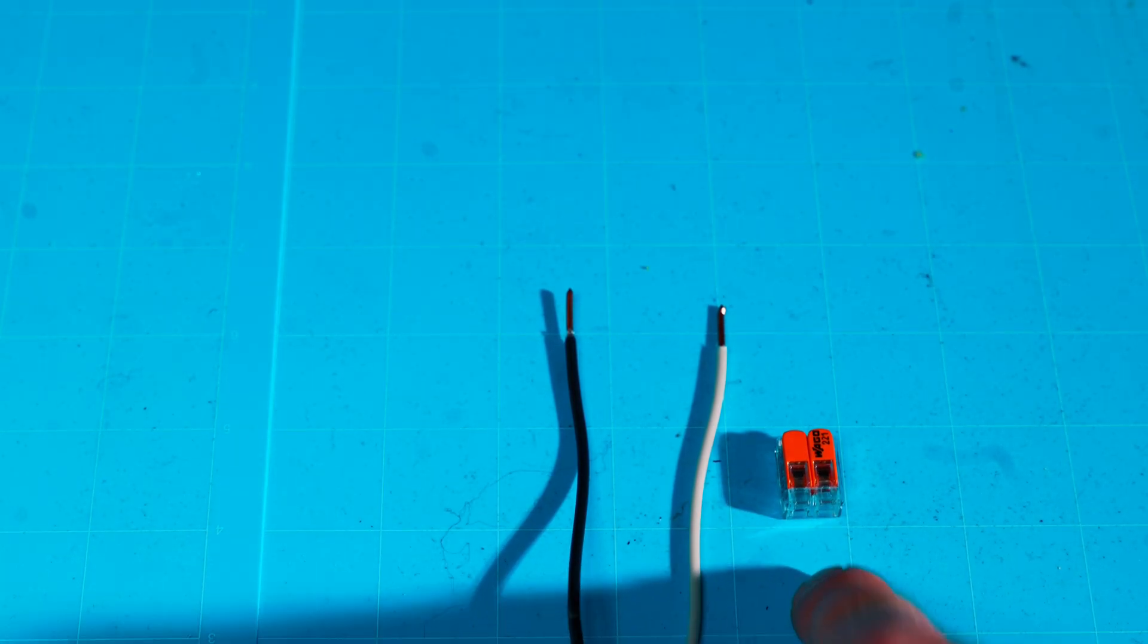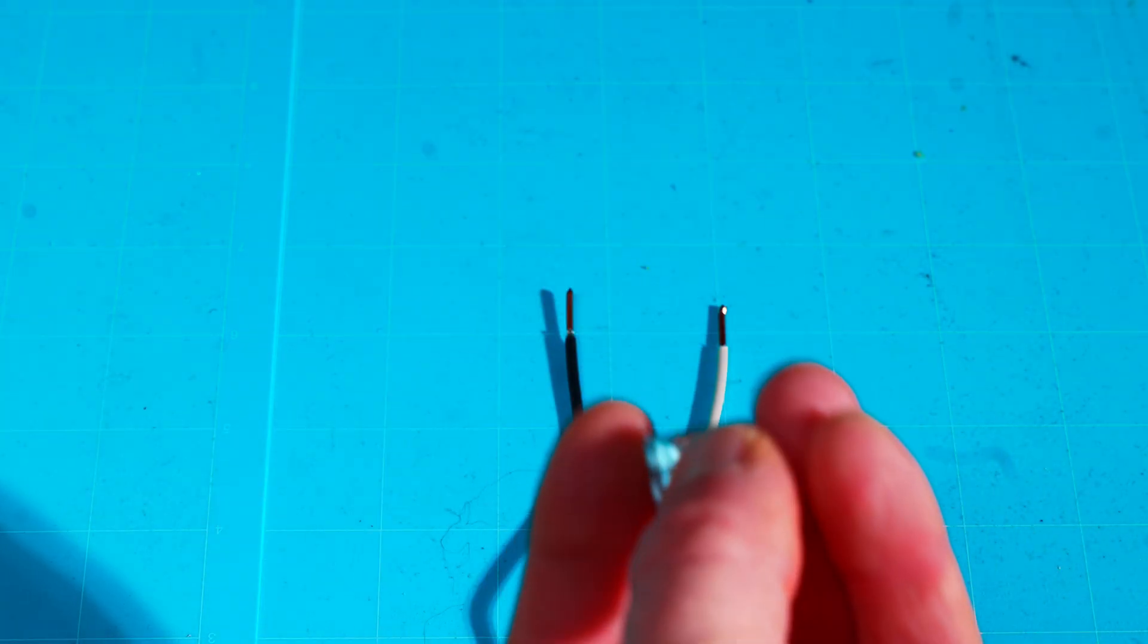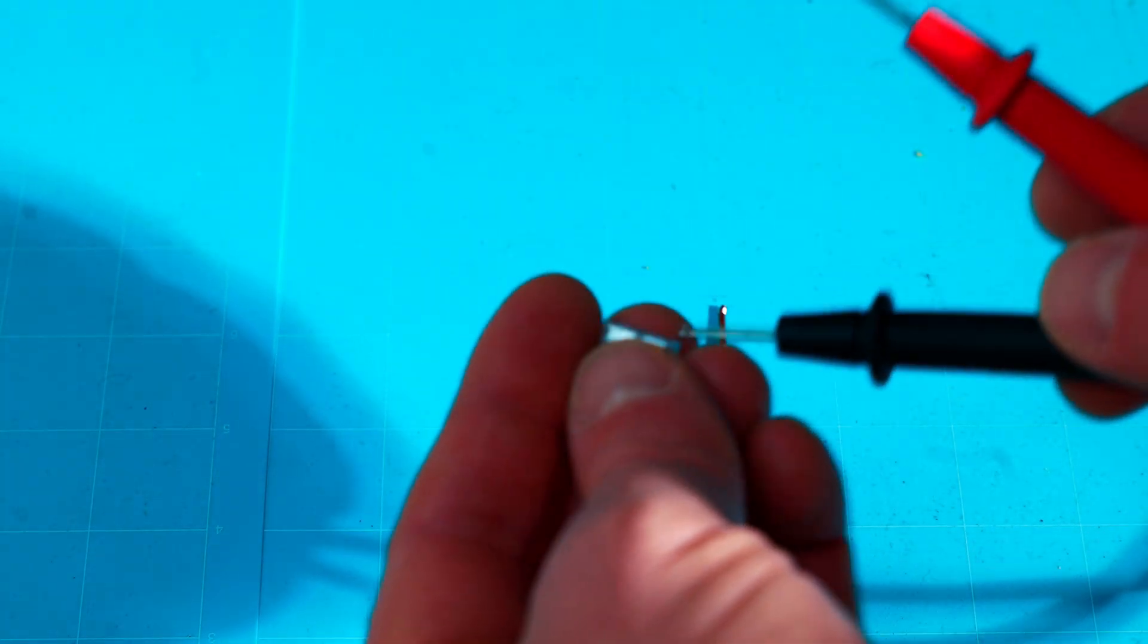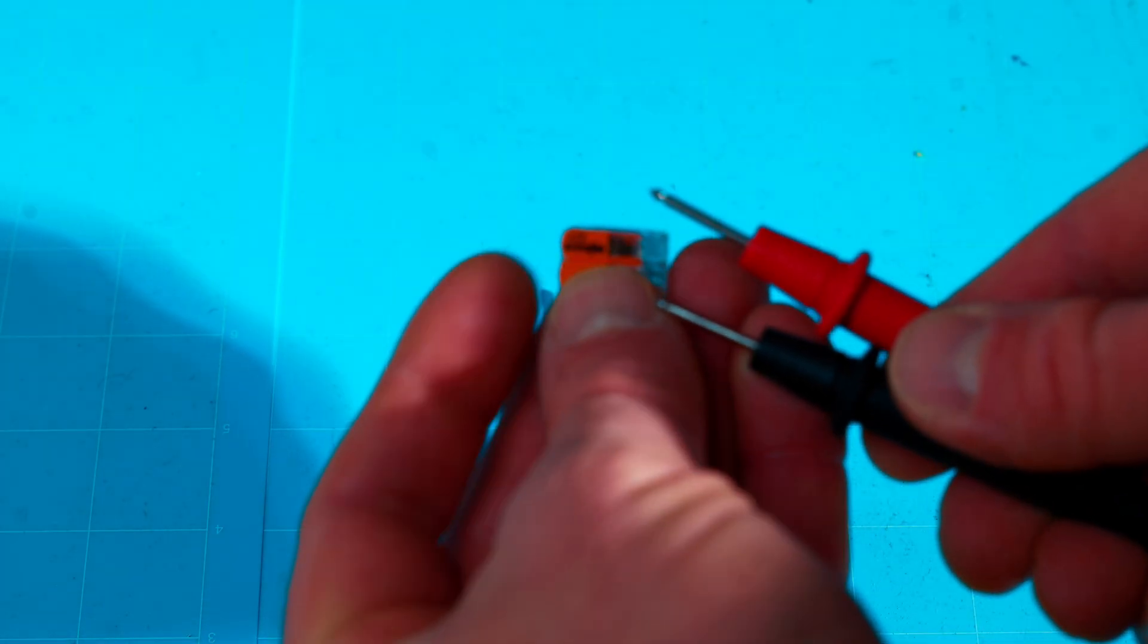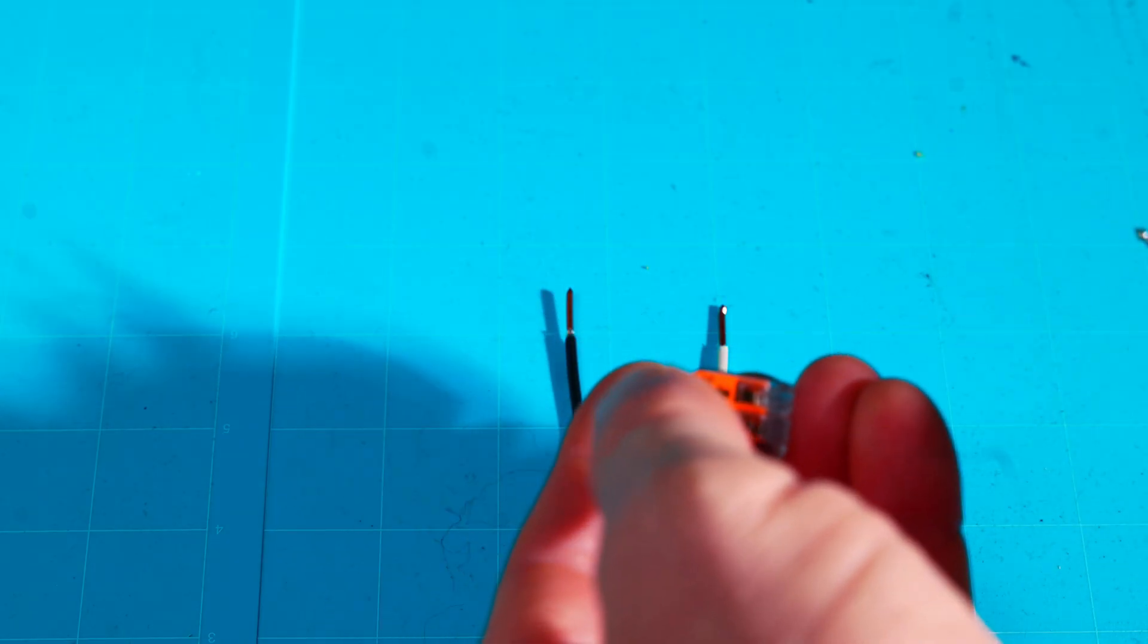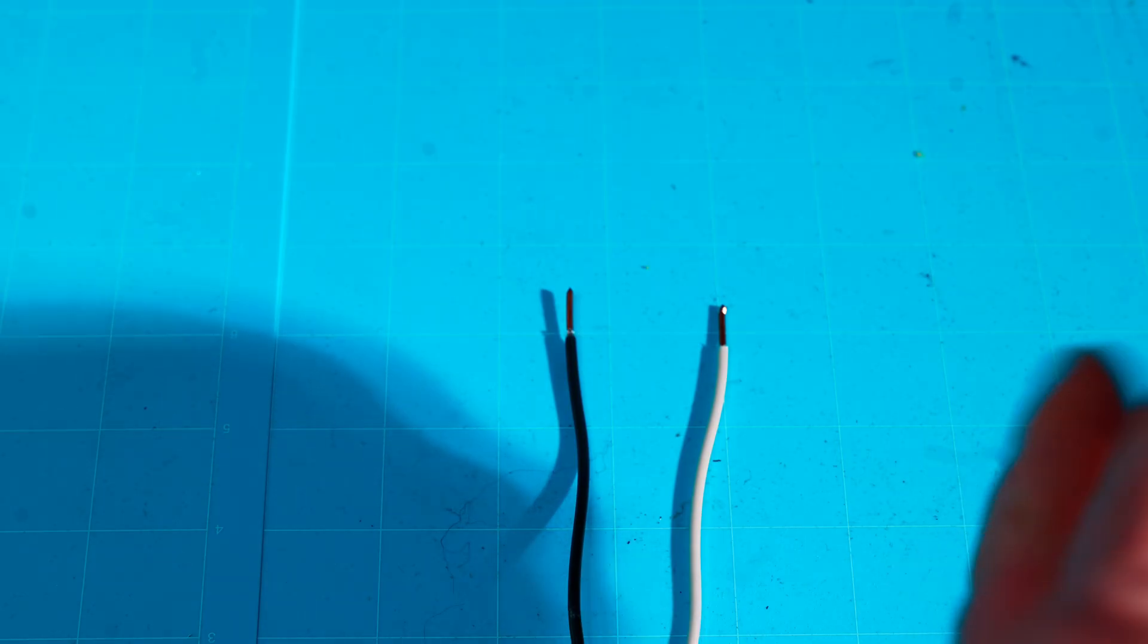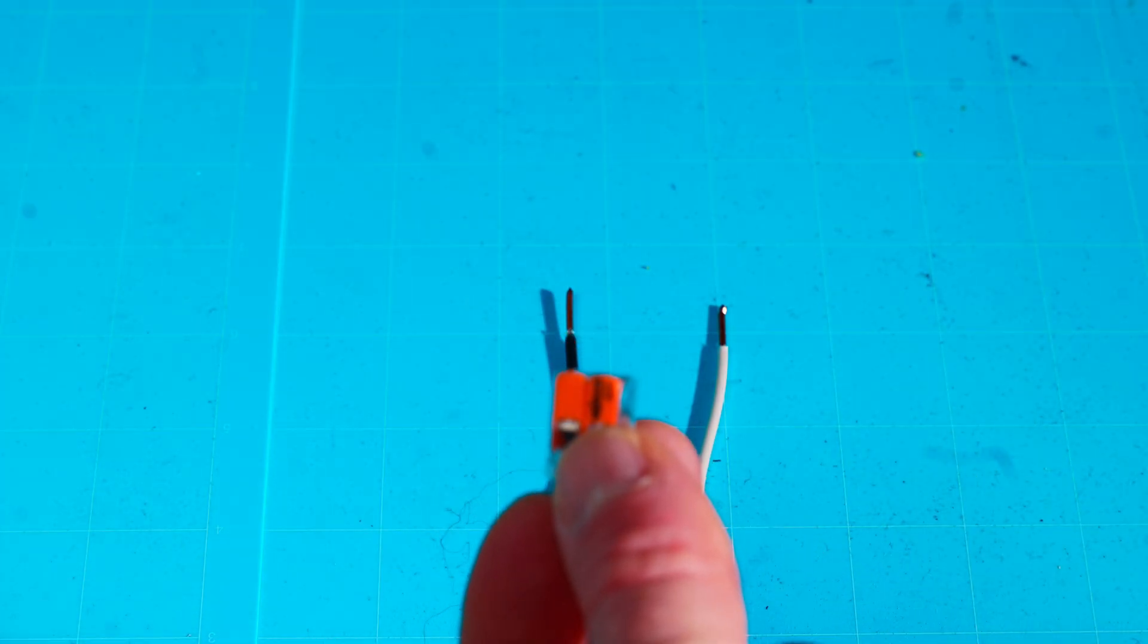One thing you may not have realized on these Wago 221s is some of them actually provide a way to test with your red and black leads, and you can actually check while they're terminated inside the Wago. You can actually check for continuity. You don't have to break the wire termination or change the mechanical makeup of your wire termination to check it. So some of the Wago 221s actually provide a method for checking without disturbing the mechanical connection.